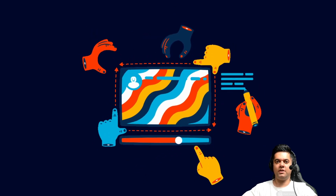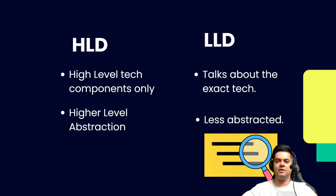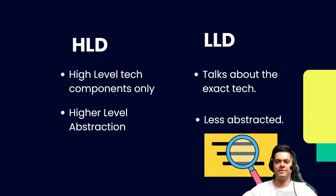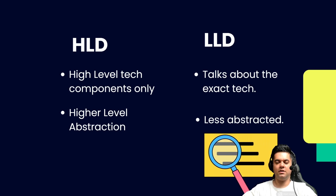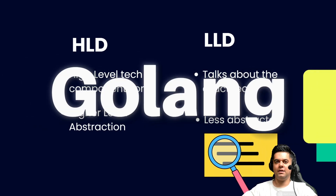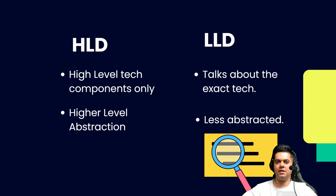Now let's explore the differences between the two. In high level design, you're mostly discussing high level tech components only, and you're not going to be talking about technologies in depth because there's a higher level of abstraction. For example, you would just say that your system has a backend server and a frontend server, but you won't discuss the technologies used to build them — you wouldn't need to say the backend was built with Go or the frontend with React.js. Those details are not relevant for the HLD round.